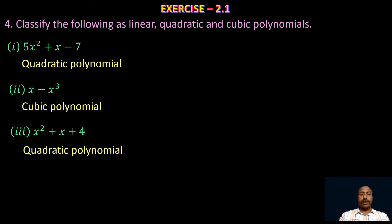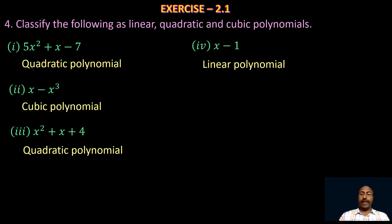Take the fourth one: x − 1. In this polynomial the highest power of the variable is 1, so it is a polynomial of first degree, and the given polynomial is a linear polynomial. A polynomial of first degree is called a linear polynomial.